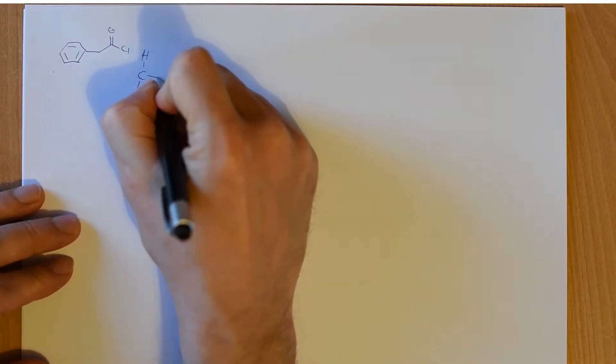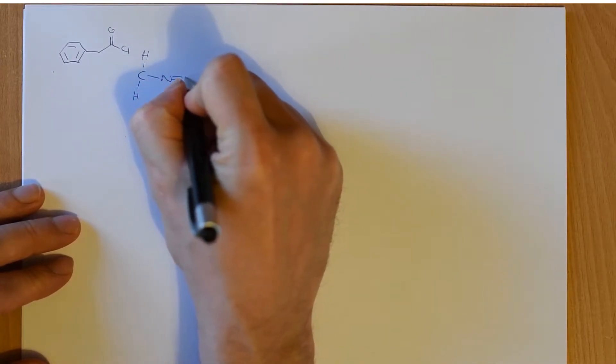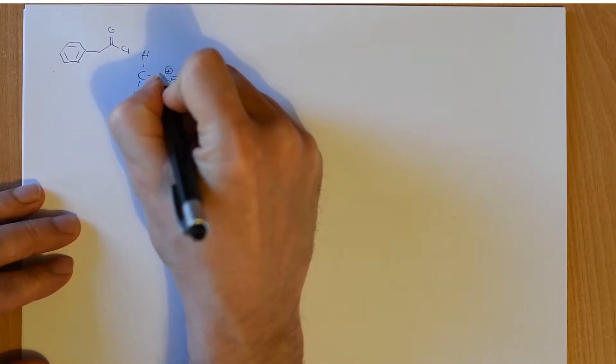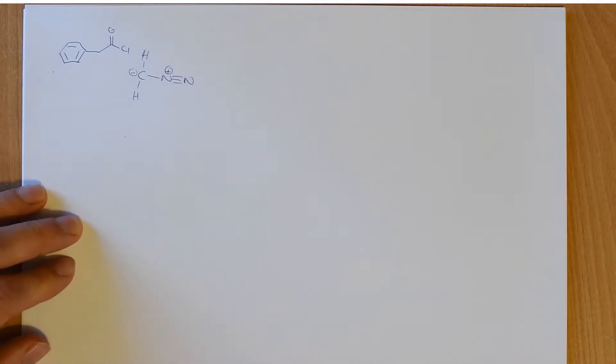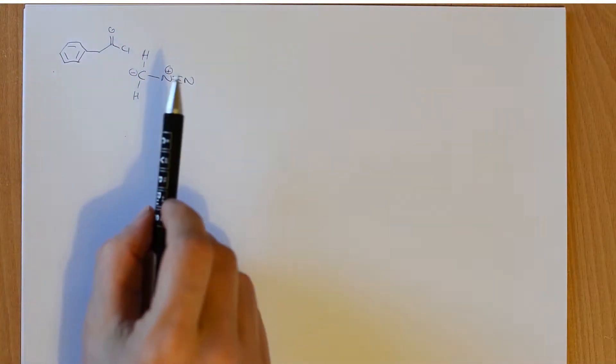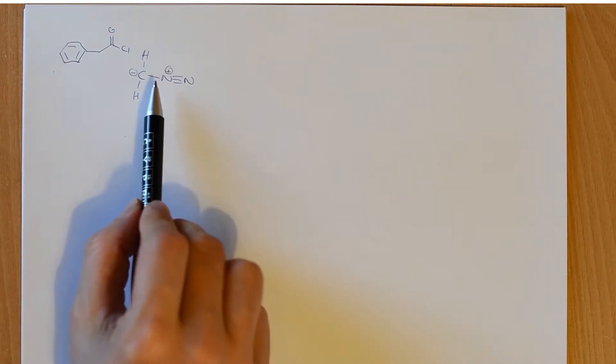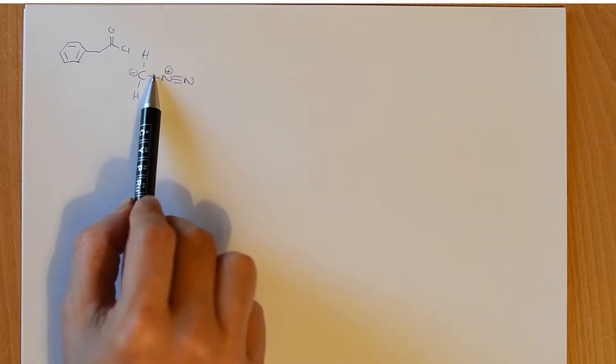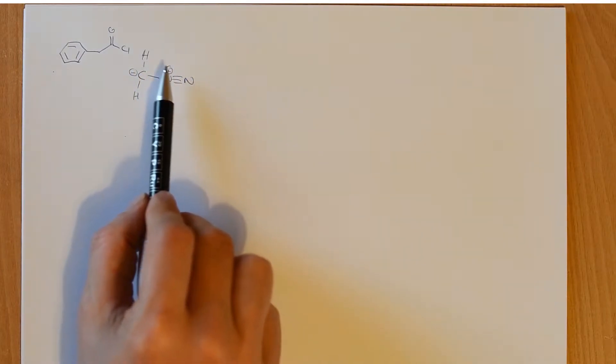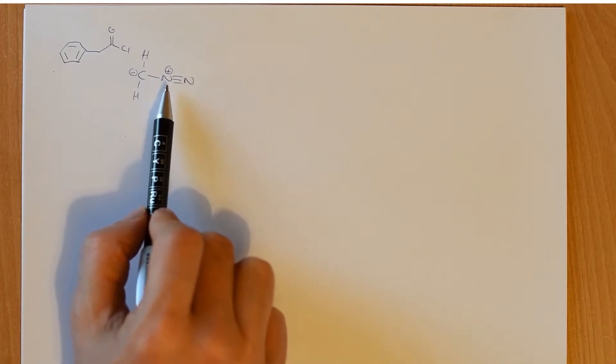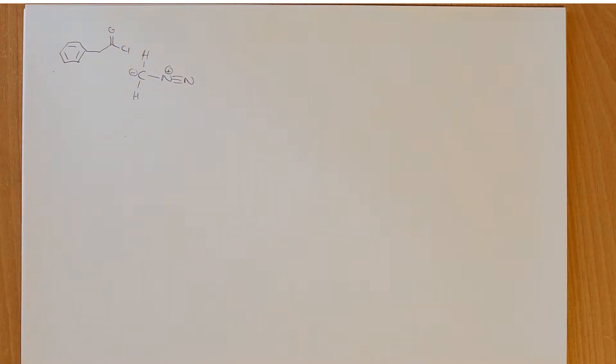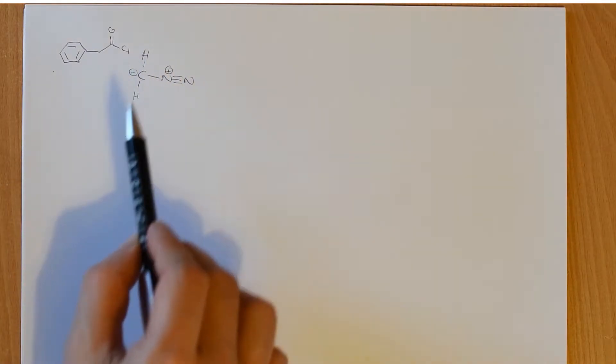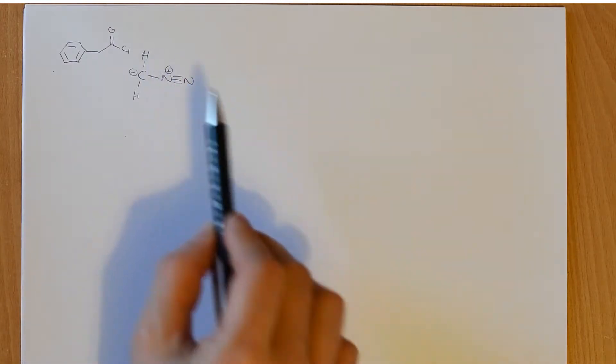Diazomethane is both highly toxic and highly explosive, and you can see why it might be readily decomposed. It's got this nitrogen-nitrogen triple bond in this resonance form. You can resonate the negative charge onto the other nitrogen, but it can easily decompose to give you nitrogen gas. It's toxic because it will easily methylate in an acidic environment, and we'll see why that happens.